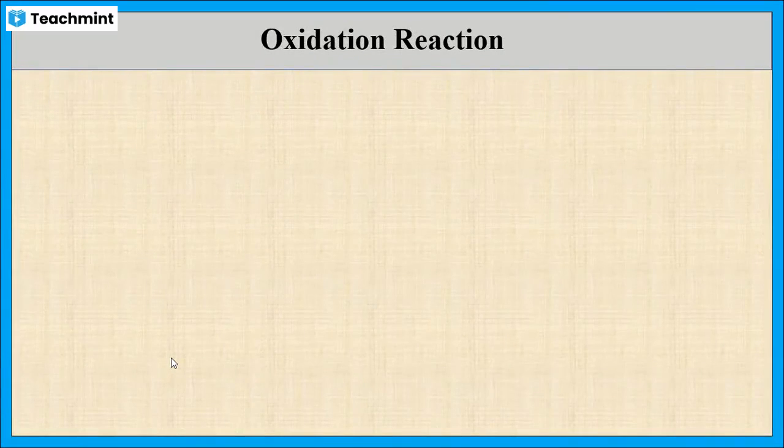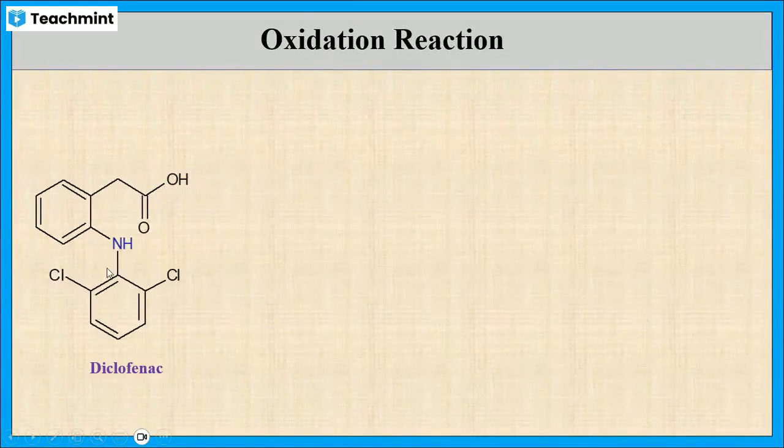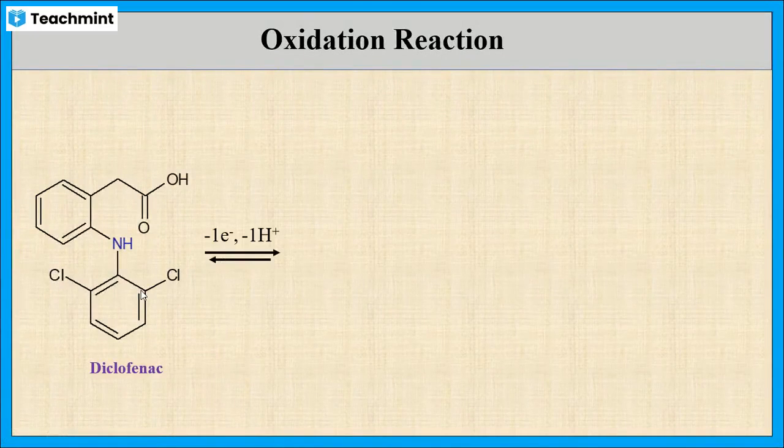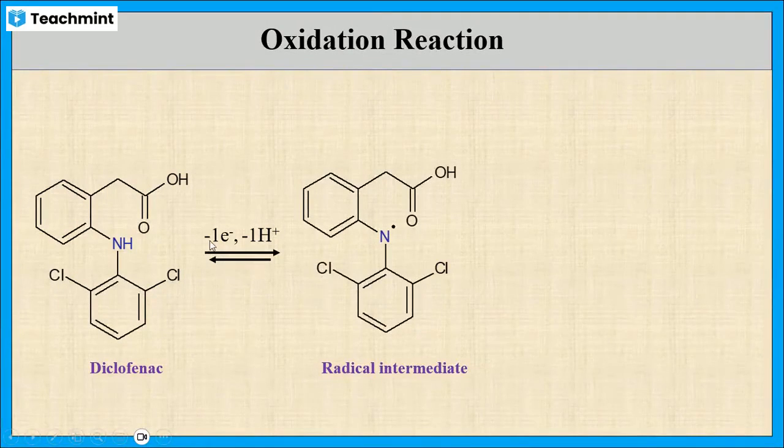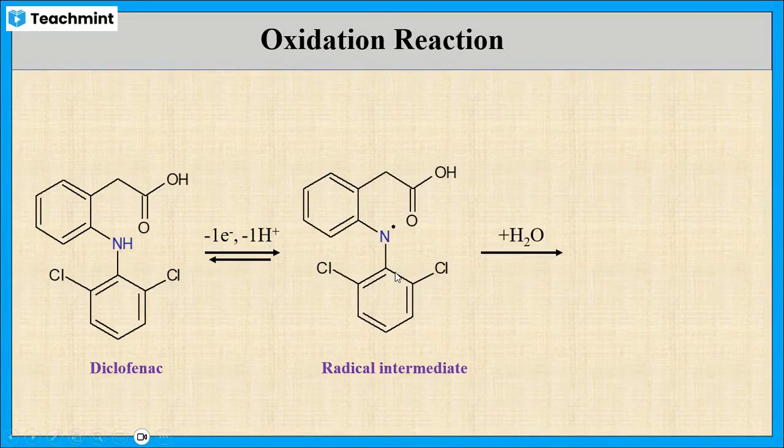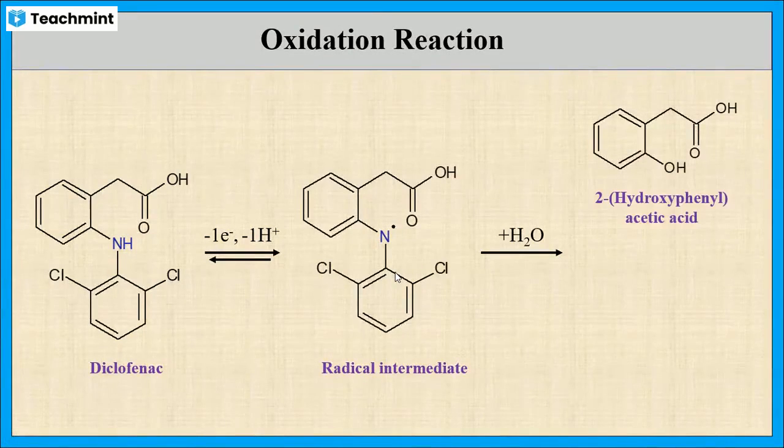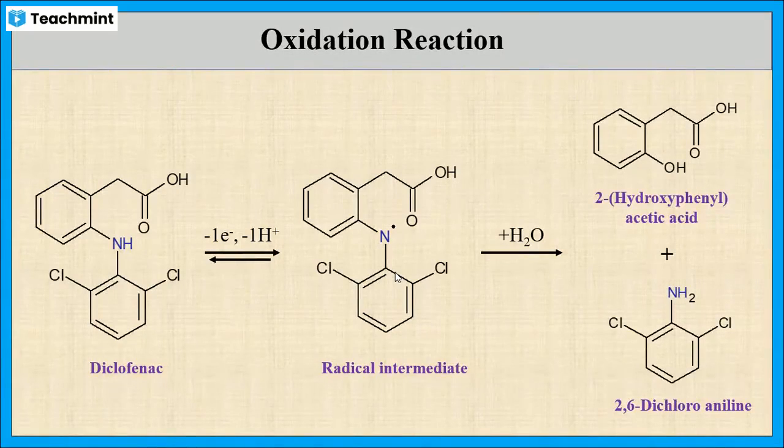Let us see the oxidation reaction of diclofenac. This is the diclofenac molecule. On oxidation, it gives a radical intermediate along with the liberation of one electron, which on further hydrolysis gives 2-hydroxyphenyl acetic acid and 2,6-dichloroaniline. This is the oxidation reaction of diclofenac.